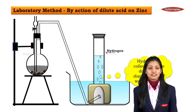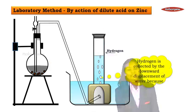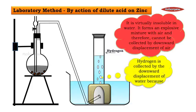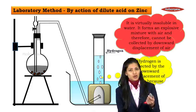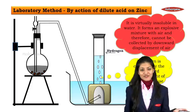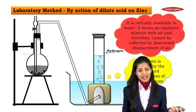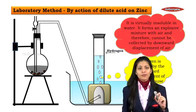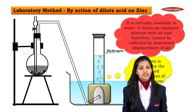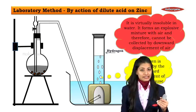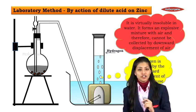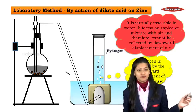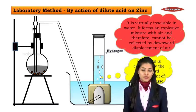The hydrogen gas effervescence is collected by the downward displacement of water because hydrogen is virtually insoluble in water. If collected over air, hydrogen forms an explosive mixture with air. That is why we do not collect it over air — we collect it by downward displacement of water, not by downward displacement of air.